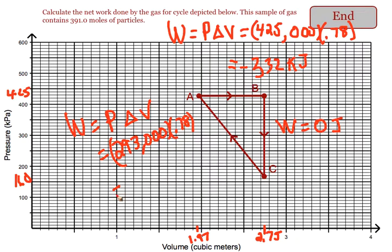This time we're compressing the gas, so we're putting energy into the gas. So this time our work is going to be positive. And we get a work of 229 kilopascals.